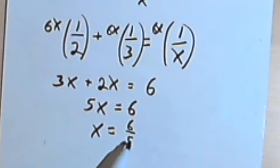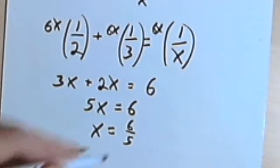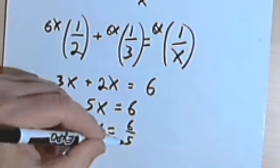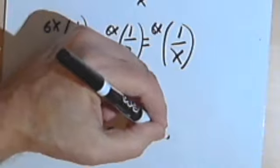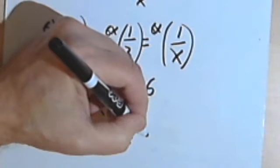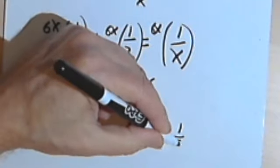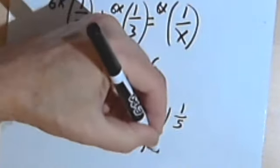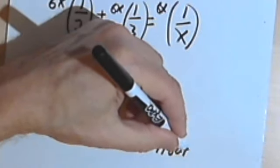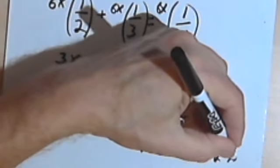So it's going to take six-fifths of an hour to get the job done. Now since this is a word problem, we want to think of something better than just six-fifths of an hour. Let's make it a mixed number, and we'll say that's one-and-one-fifth hour. And if we want to, we can actually call that one hour and twelve minutes.